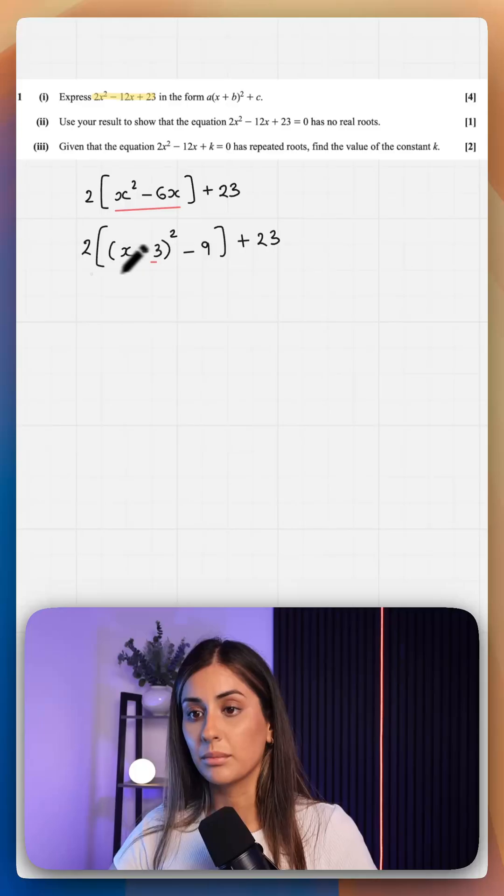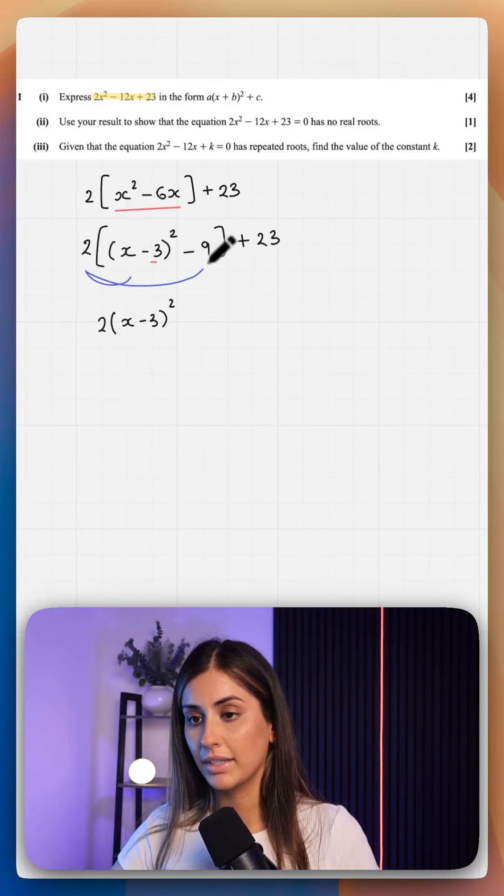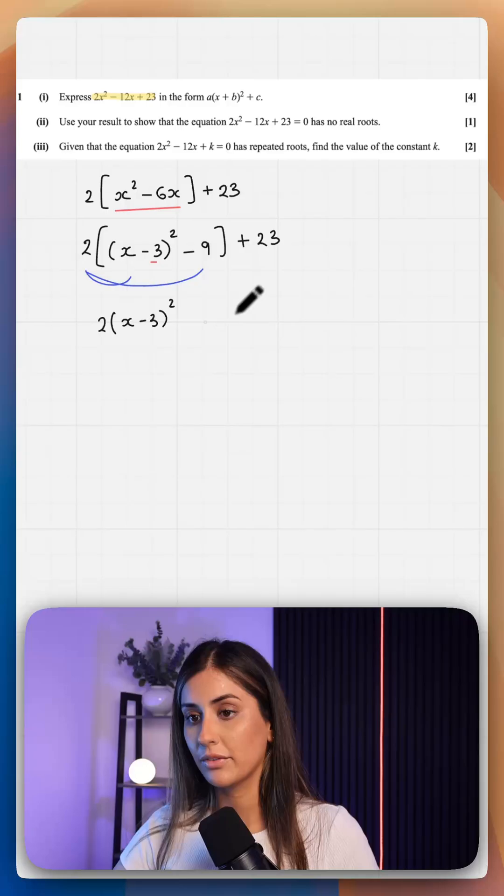And then we expand and simplify. So we're going to do 2 times this bracket and 2 times that. That's minus 18 plus 23, which is 5.